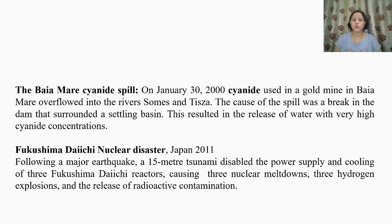On January 9, 2000, the Baia Mare cyanide spill incident happened. Cyanide used in a gold mine in Baia Mare overflowed into the rivers Somes and Tisza. This caused a spill surrounding a settling basin, resulting in the release of water with very high cyanide concentration. The cause of the spill was a break in the dam that surrounded the settling basin.